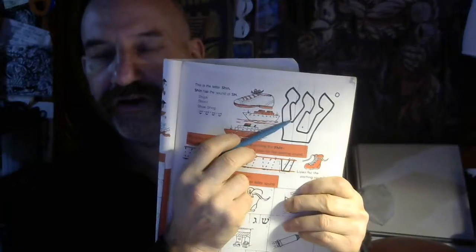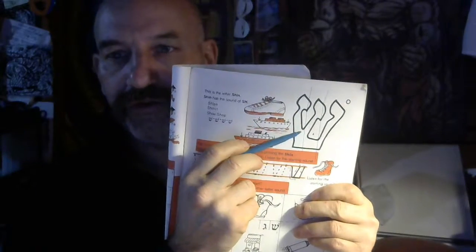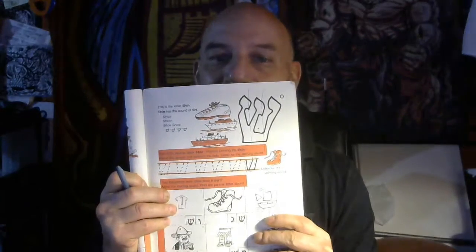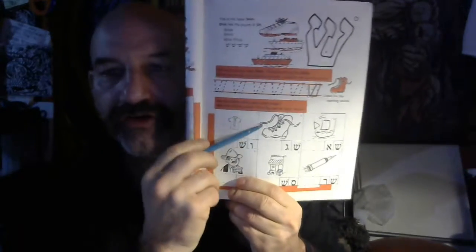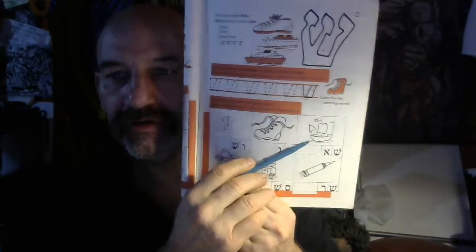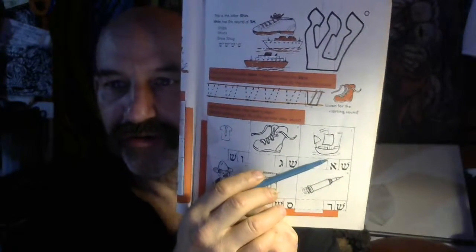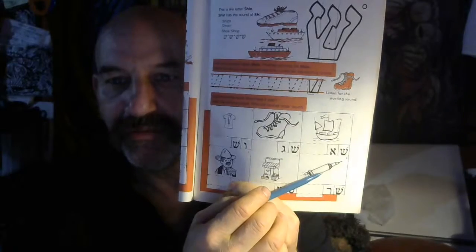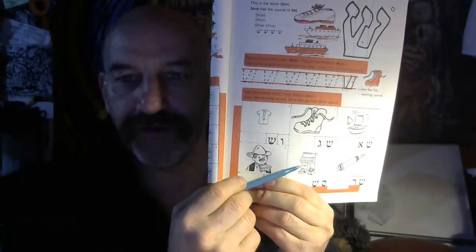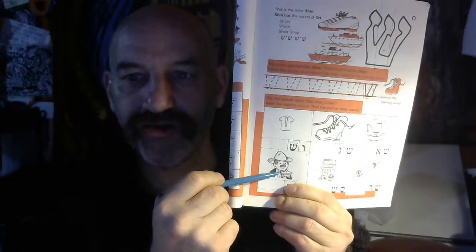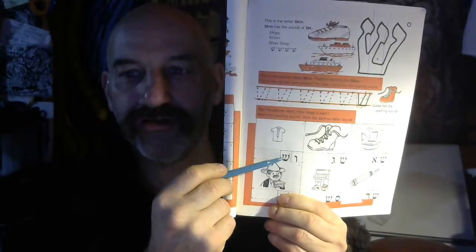Start the video by understanding this is the shin. It looks like a W. The French language rarely has any words that begin with the sound of W and in Hebrew they count it as the shin letter. Shoe, something to do with a boat, something to do with a rocket, something to do with a store, something to do with a sheriff, something to do with a shirt. Shin.